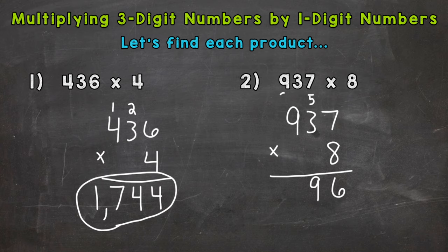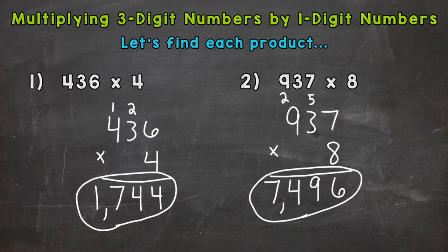Carry our 2 and we have 8 times 900 or just think of it as 8 times 9 plus 2. So 8 times 9 is 72 plus 2 gives us 74. And we can just write our 7 here because we don't have any more places. So just bring that 7 down and we get 7496.